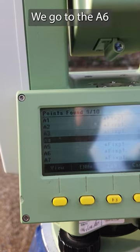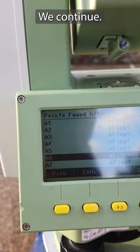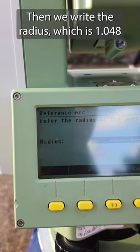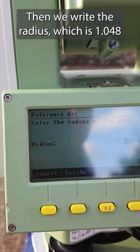Then we go again to the list, we go to the A6, continue. Then we write the radius which is 1.048.